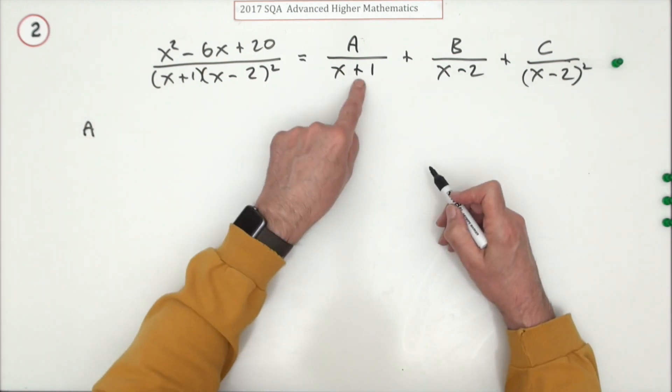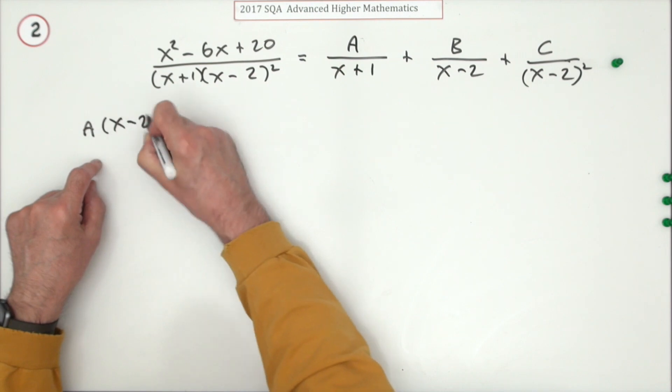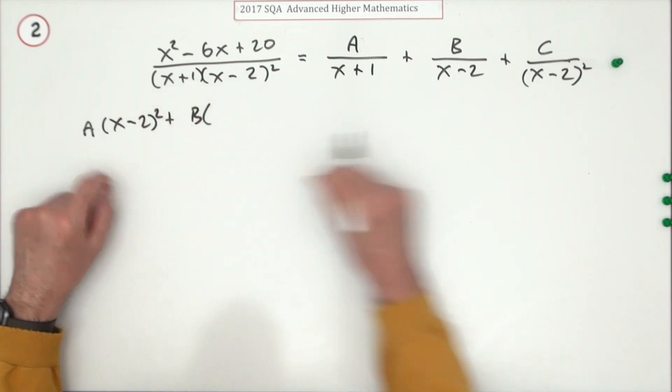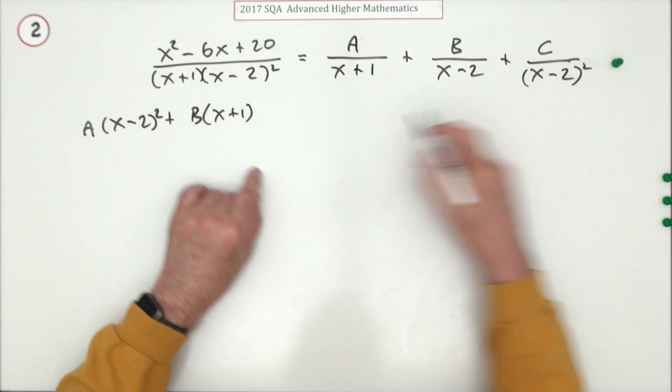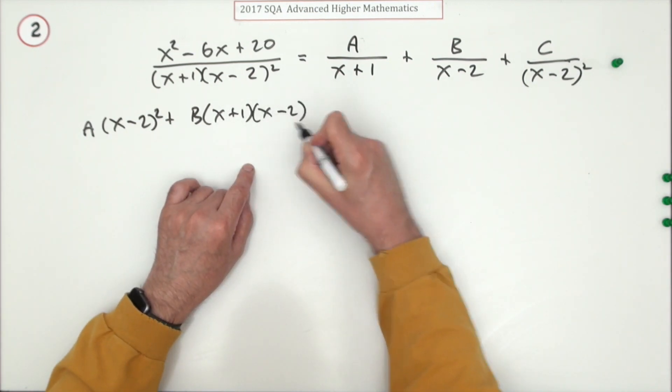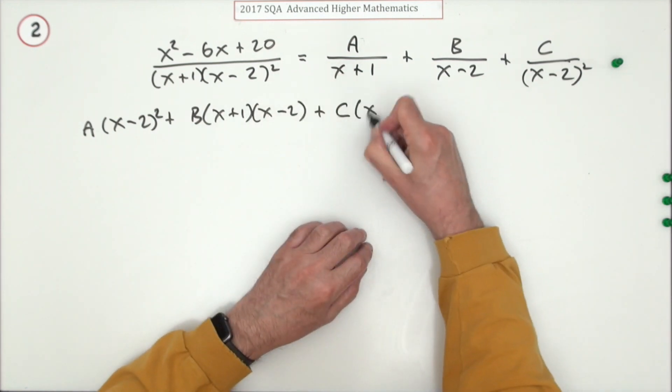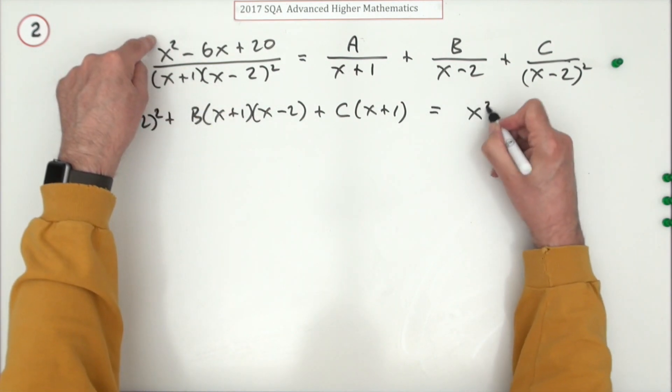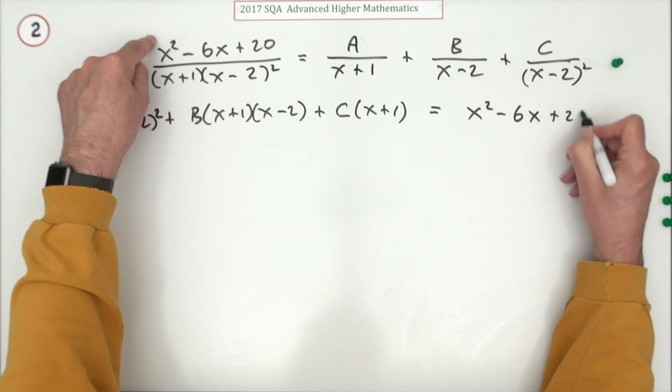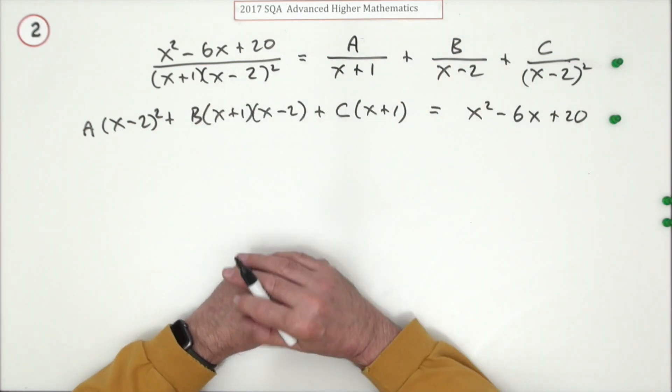If this was reduced to a single fraction over this denominator, the numerator on this side would equal the numerator on that side. You add this up, which is effectively the same as taking that across and multiplying. I've got x plus one - I'll need an x minus two squared.